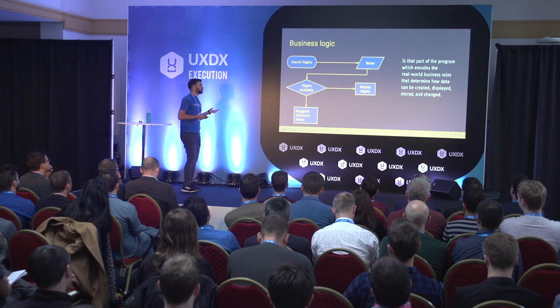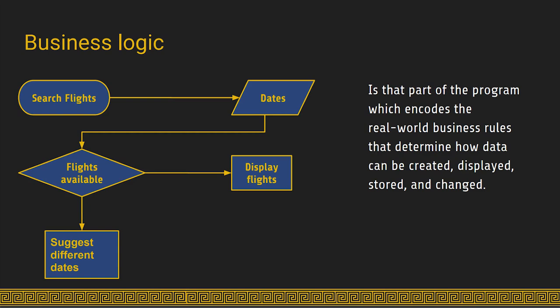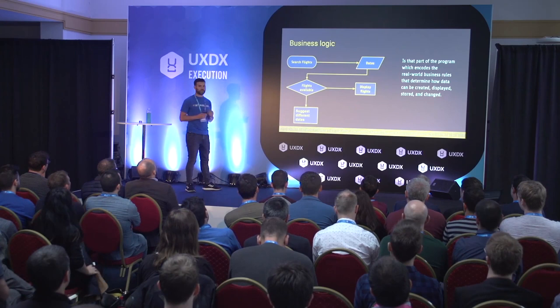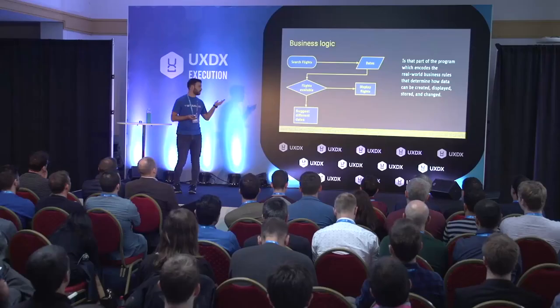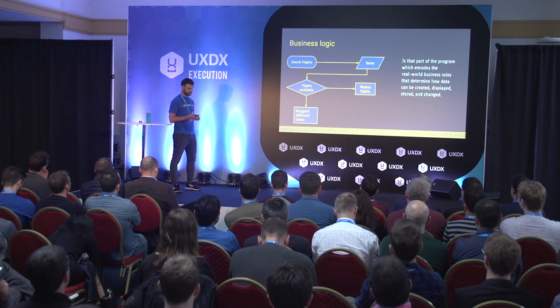The first driver of complexity in web development is business logic. Business logic is that part of the program which encodes real business rules — it dictates how business objects interact with one another. We can represent it through a flowchart: I want to search for flights, I input my dates, if flights are available I display them, otherwise I suggest different dates. This is a simple business logic that we can encode.